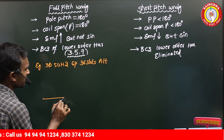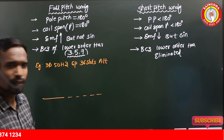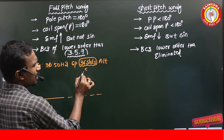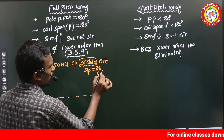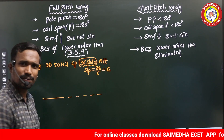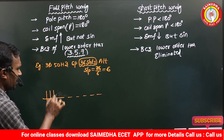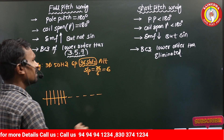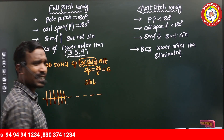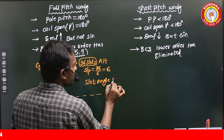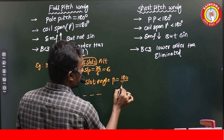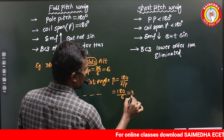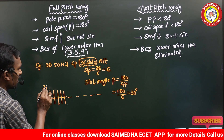There are six poles and thirty-six slots. Slots per pole equals thirty-six divided by six, so each pole has six slots — one, two, three, four, five, and six. The slot angle beta equals 180 divided by slots per pole, which is 180 divided by 6, giving thirty degrees. So each slot angle is thirty degrees.